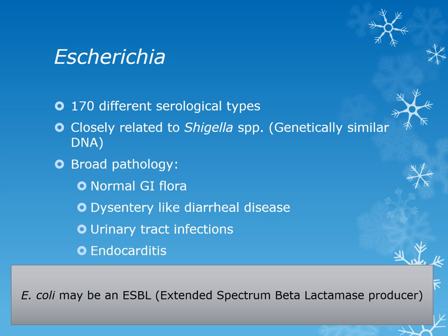There are 170 different serological types for Escherichia, and they are biochemically closely related to Shigella — genetically similar in their DNA and in the same tribe. Most of the time Escherichia is normal gut flora, unless it is a toxin strain like a Shiga toxin-producing strain. Escherichia can cause dysentery-like diarrheal disease, is the number one cause of urinary tract infections in women, and can lead to opportunistic diseases like endocarditis.